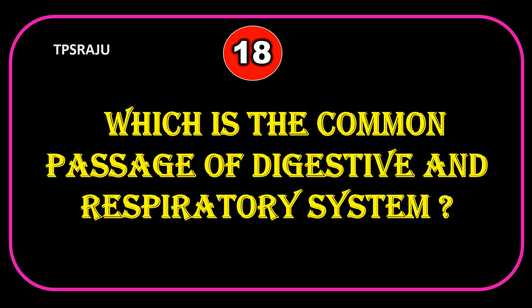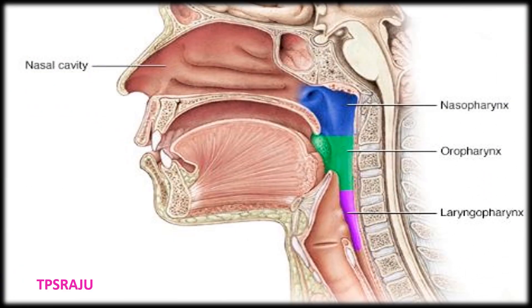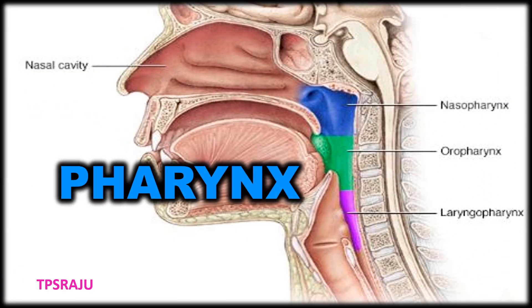Which is the common passage of the digestive and respiratory system? Pharynx.